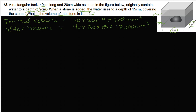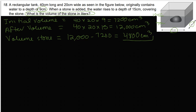So the volume of the rock is going to be 12,000 minus 7,200, and that would be 4,800 centimeters cubed. The question is really asking what this is in terms of liters.